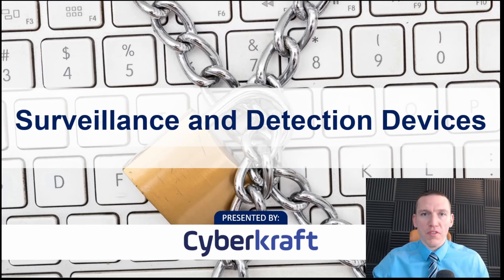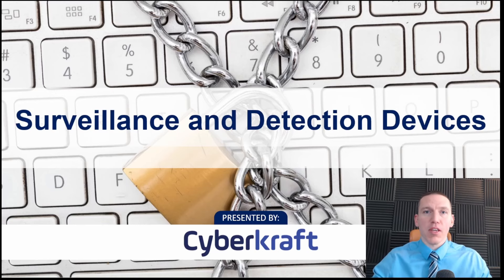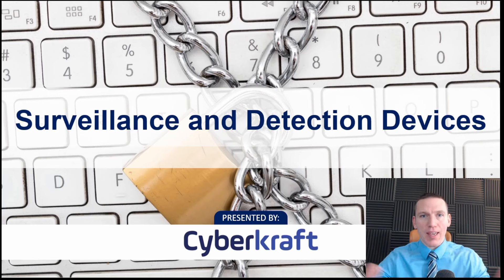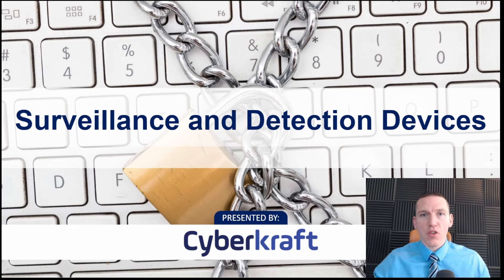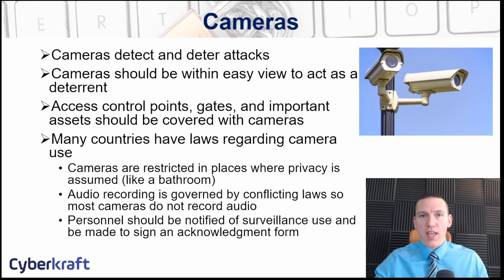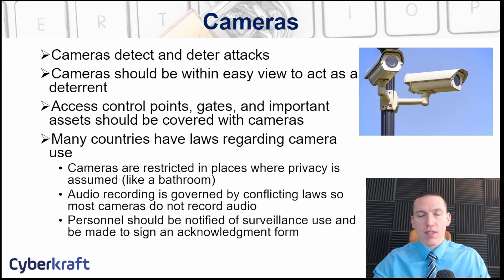One of the main goals in physical security is to detect the presence of humans or maybe animals within a facility to detect possible intrusion. Some of the ways we do that are with cameras and with motion sensors. There are different techniques that we can use to do this.